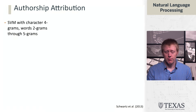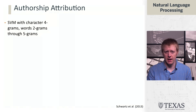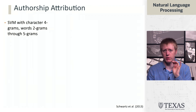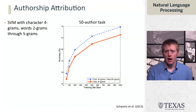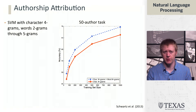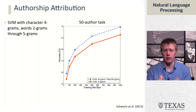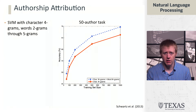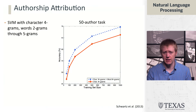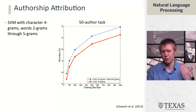The model they used is relatively straightforward: a support vector machine with character 4-grams and word 2- through 5-grams, meaning features look at pairs, triples, quadruplets, and quintuplets of words. Showing results from the 50-author classification task — rather than 1 in 1,000, it's 1 in 50 — the accuracies are surprisingly high. Their full model, shown in the blue line, gets to around 70% accuracy when trained on 1,000 tweets from each author, and even starting with only 50 or 100 tweets, performance is still reasonably good.